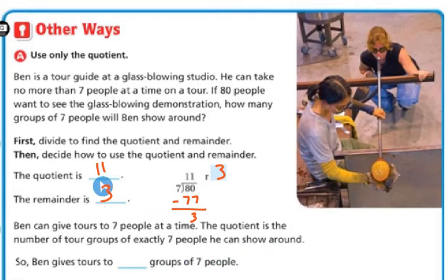And the quotient is the number of tour groups that have the exact number of seven that he can show around. So that's going to be 11. So Ben gives tours to 11 groups of seven people.